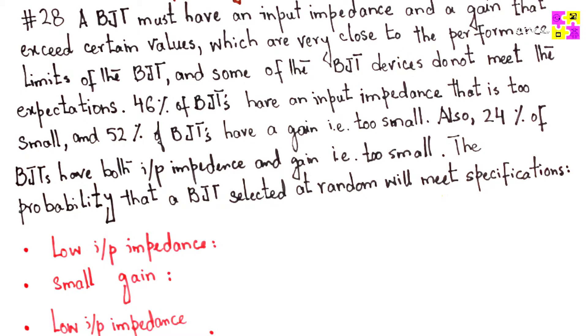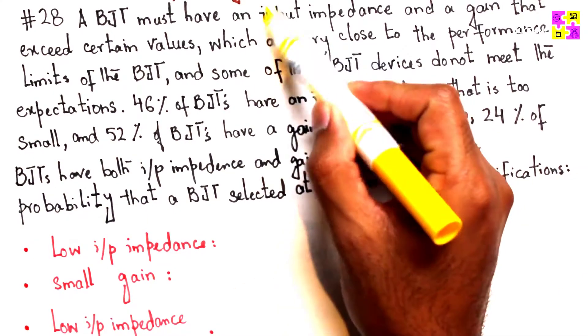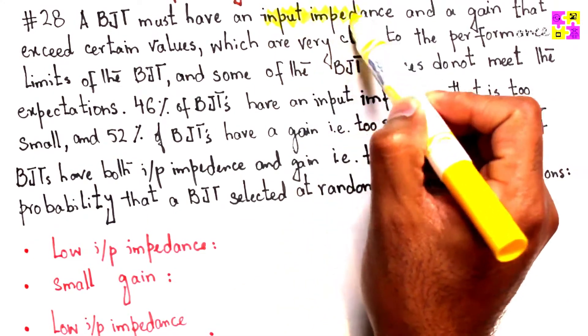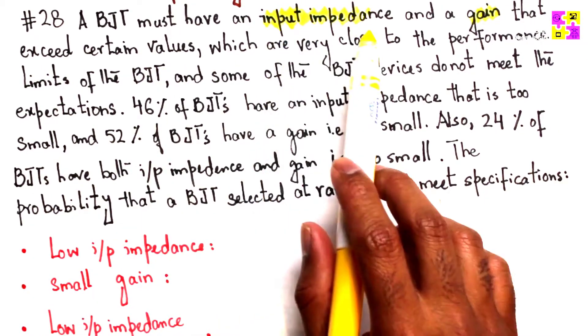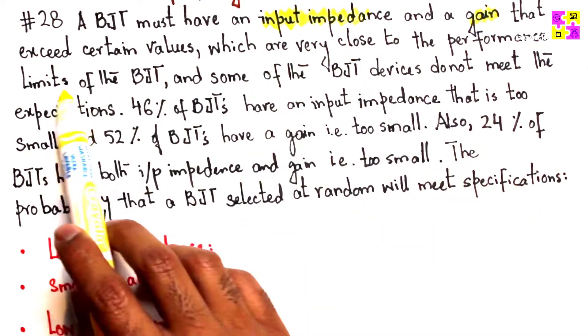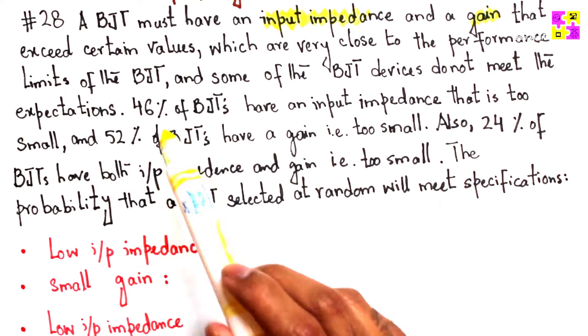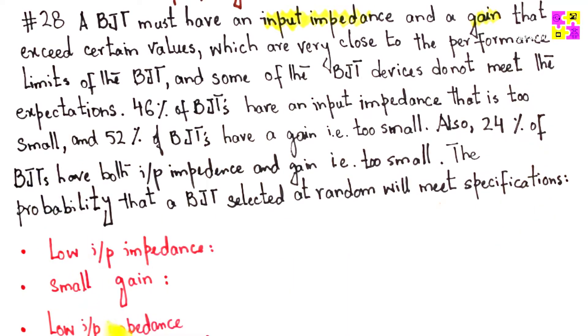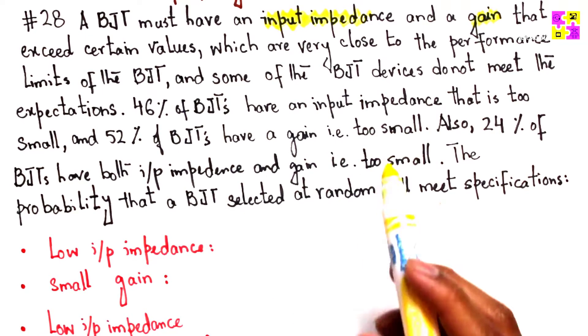Here's another very interesting one, and you have to focus on the text here. A BJT, a bipolar junction transistor, must have an input impedance and a gain that exceeds certain values, which are very close to the performance limits of the BJT. Some of the BJT devices do not meet the expectations.